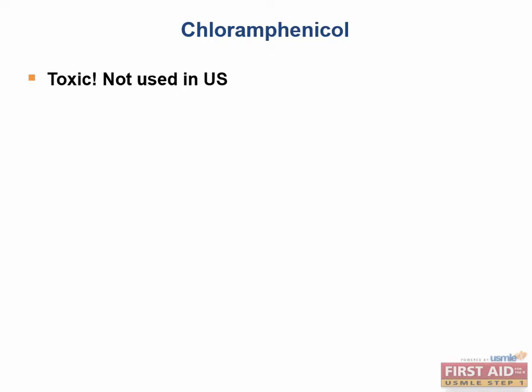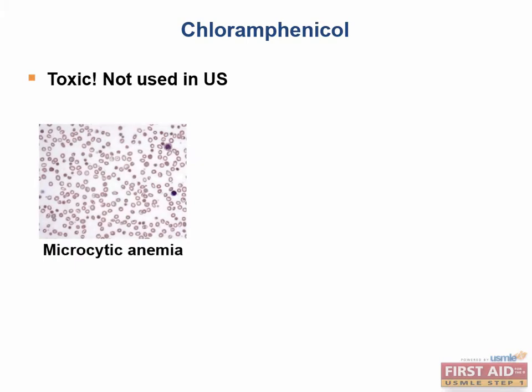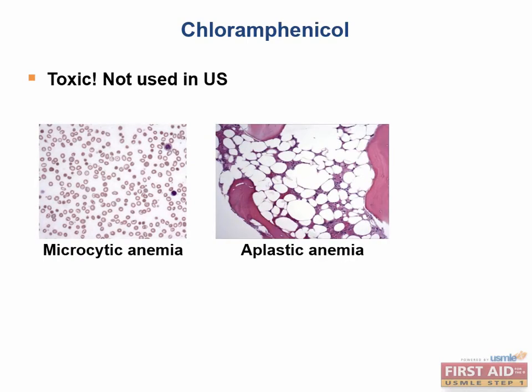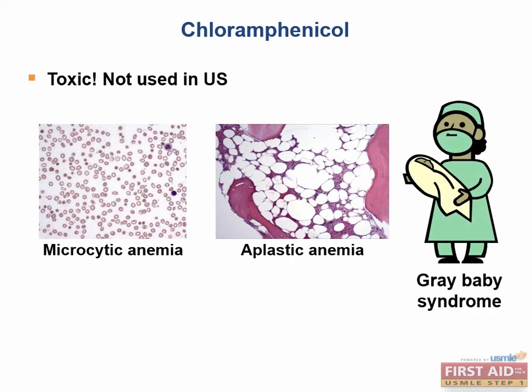The most important testable material on chloramphenicol for Step 1 is the toxicity it causes. Chloramphenicol is not regularly used in the United States because of severe toxicity. The drug causes three important side effects: number one, it causes a microcytic anemia; number two, it can cause an aplastic anemia; and three, it can cause gray baby syndrome.